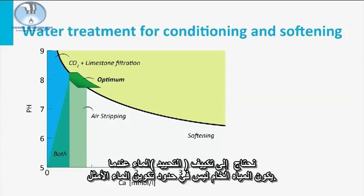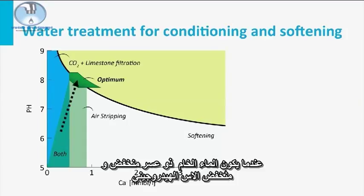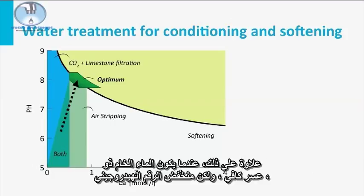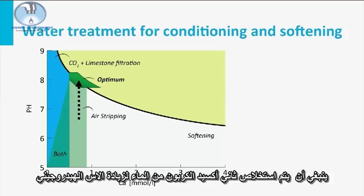Conditioning of the water is needed when the raw water isn't in the range of optimal water composition. When the raw water has a low hardness and low pH, it should be passed through a calcium carbonate filter to dissolve calcium and bicarbonate as well as to increase the pH. When the raw water has a sufficient hardness but a low pH, carbon dioxide should be stripped out of the water to increase the pH.